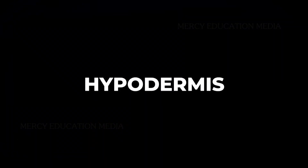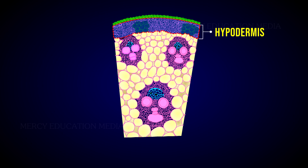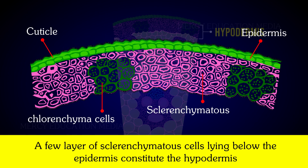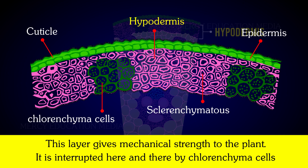Describe hypodermis. A few layers of sclerenchymatous cells lying below the epidermis constitute the hypodermis. This layer gives mechanical strength to the plant. It is interspersed here and there by chlorenchyma cells.